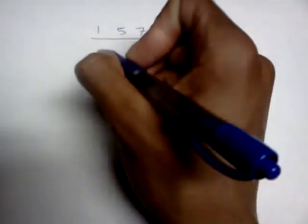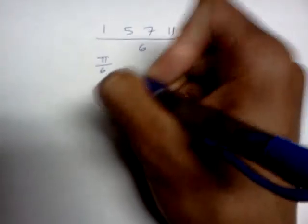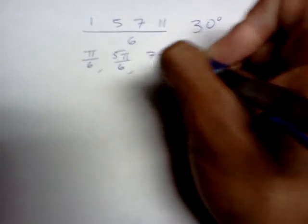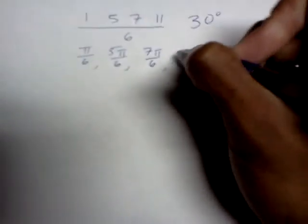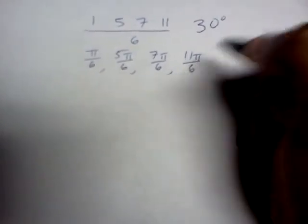So writing that with the pi, we write pi over 6 for the first quadrant, 5 pi over 6 for the second quadrant, 7 pi over 6 for the third quadrant, and 11 pi over 6 for the fourth quadrant.